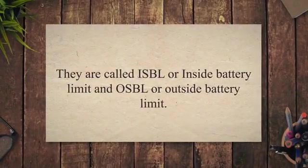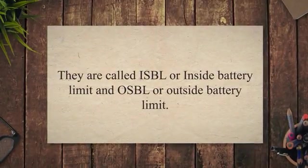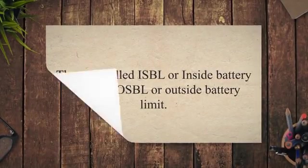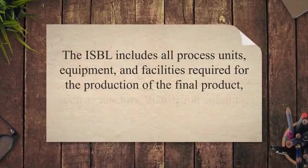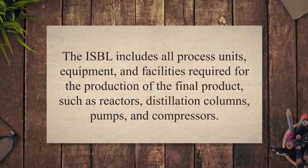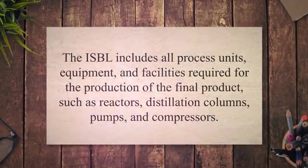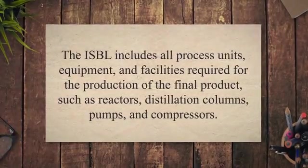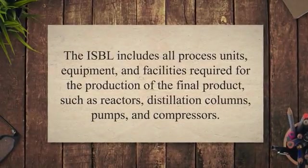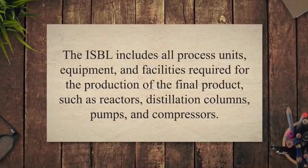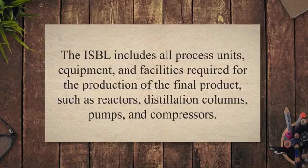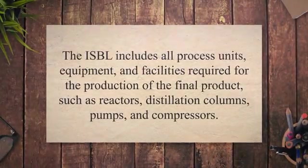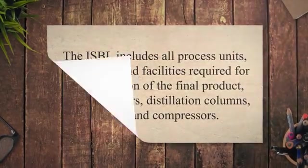Both ISBL and OSBL are common terms used in the design and operation of a refinery or process plant. ISBL stands for Inside Battery Limits. It refers to the area within the physical boundary of the plant where the primary process equipment is located. The ISBL includes all process units, equipment, and facilities required for the production of the final product, such as reactors, distillation columns, pumps, and compressors.